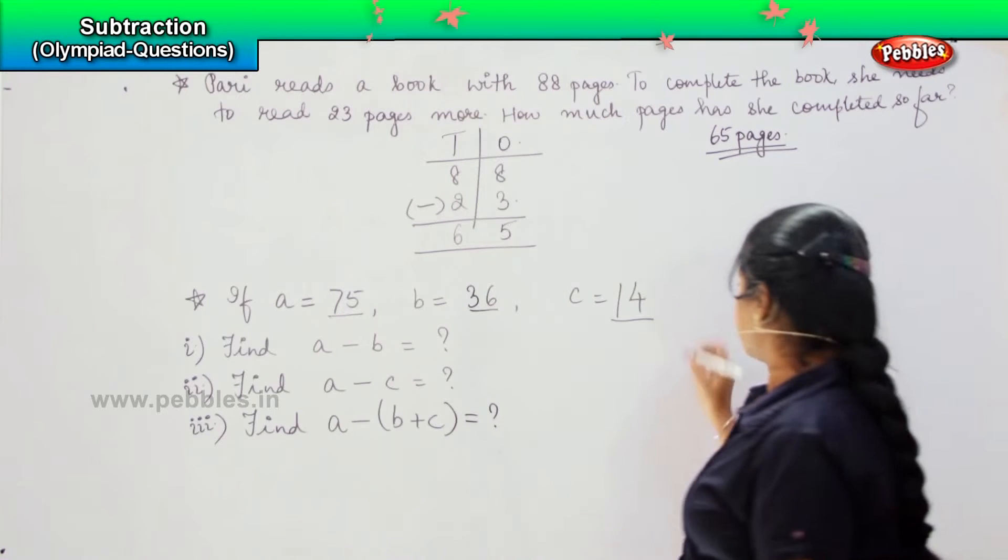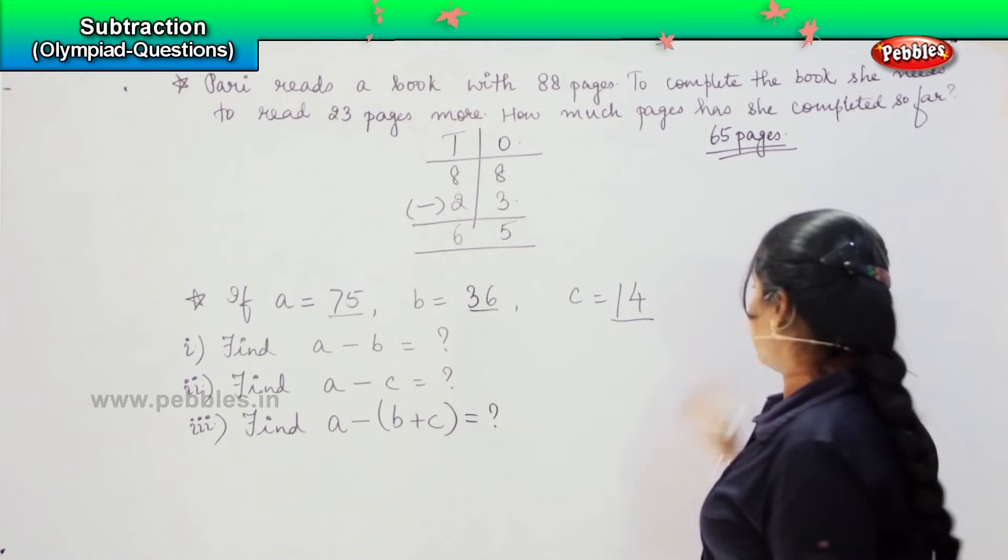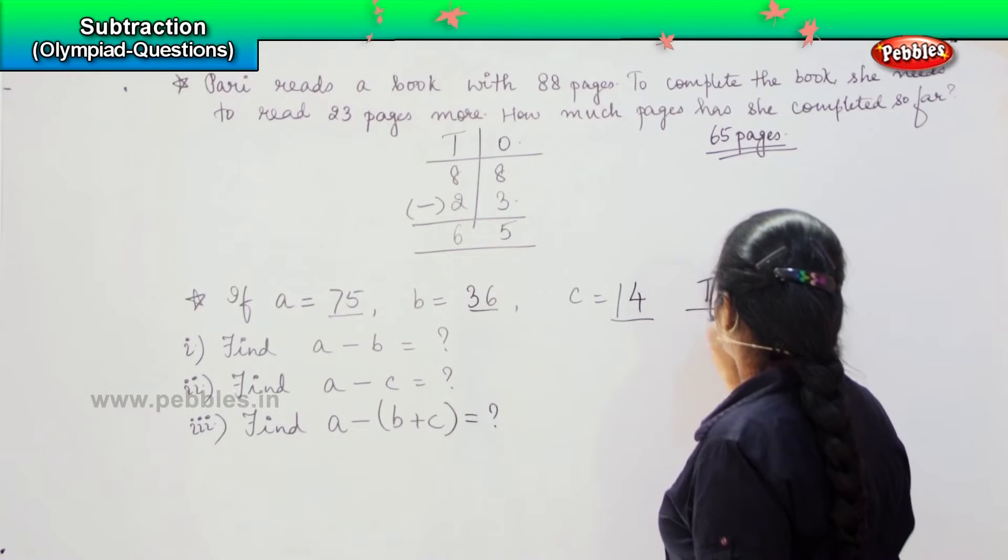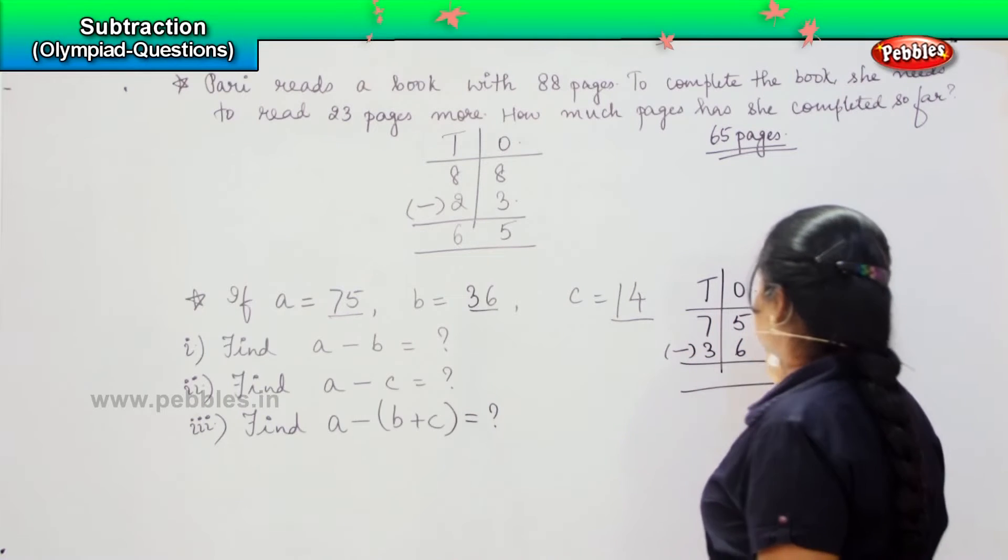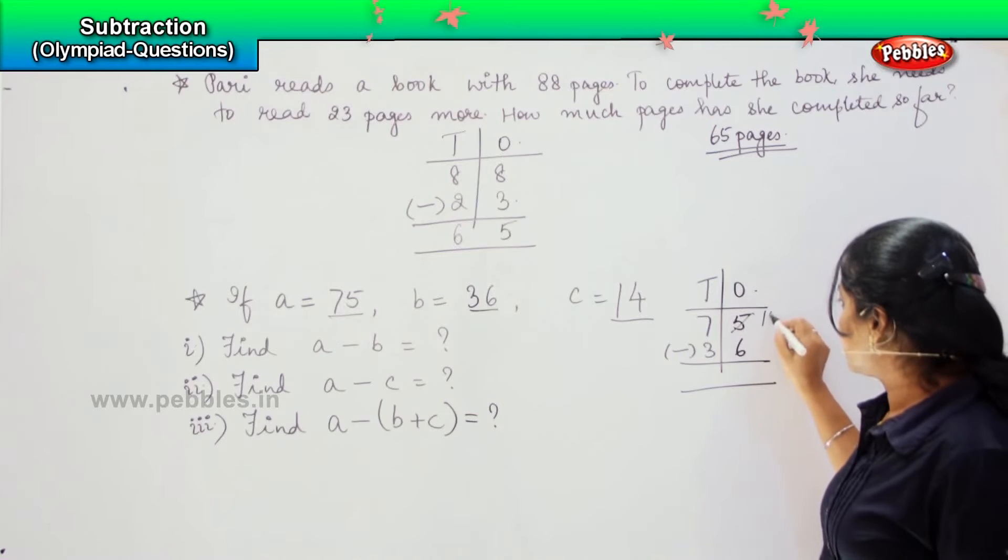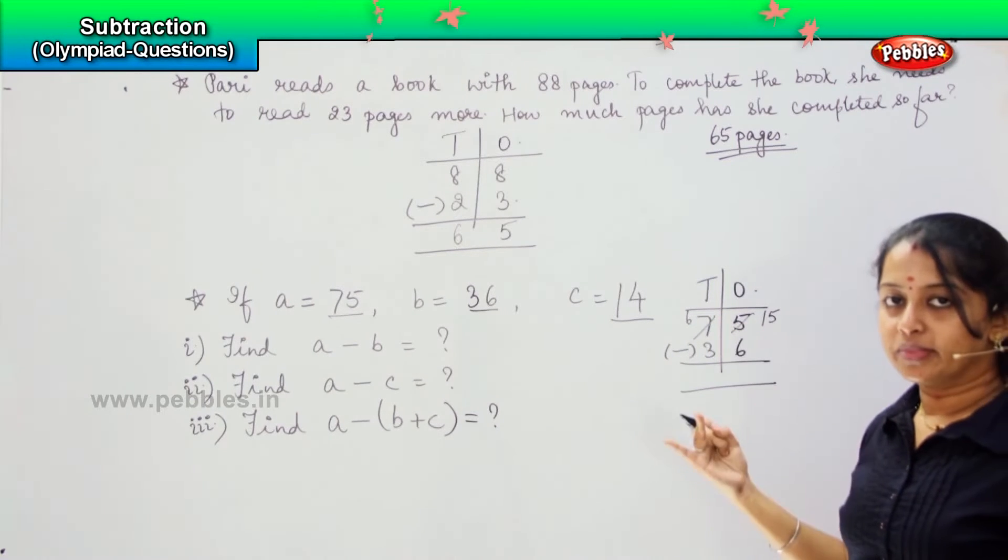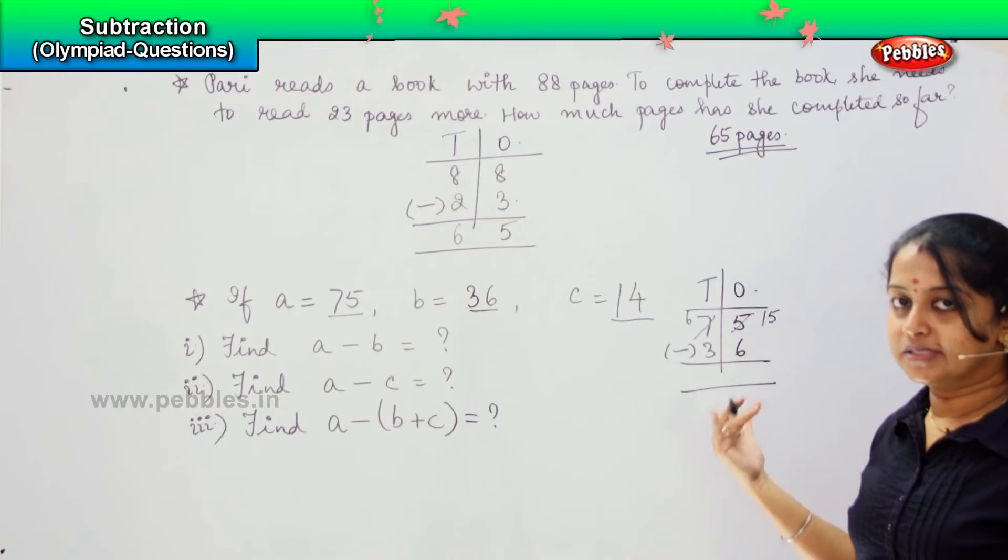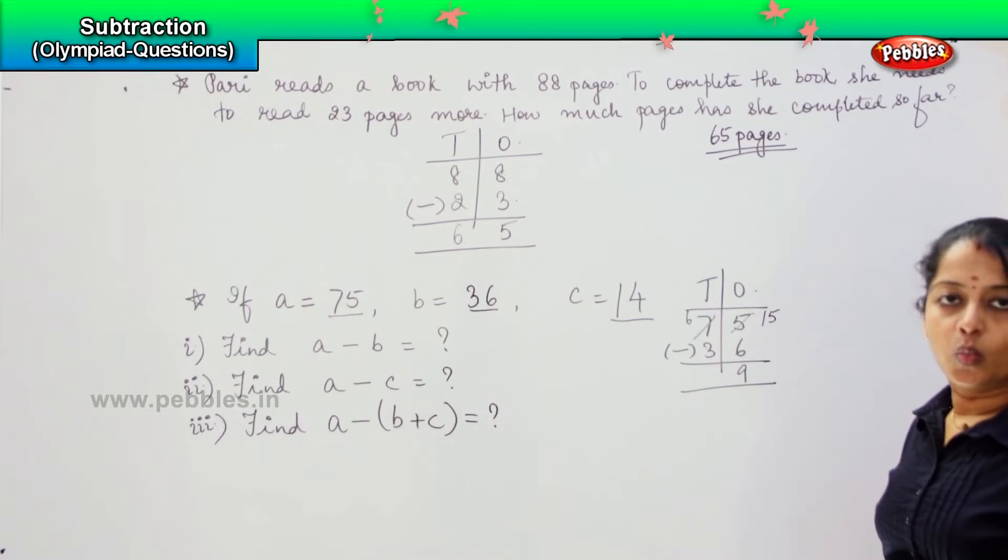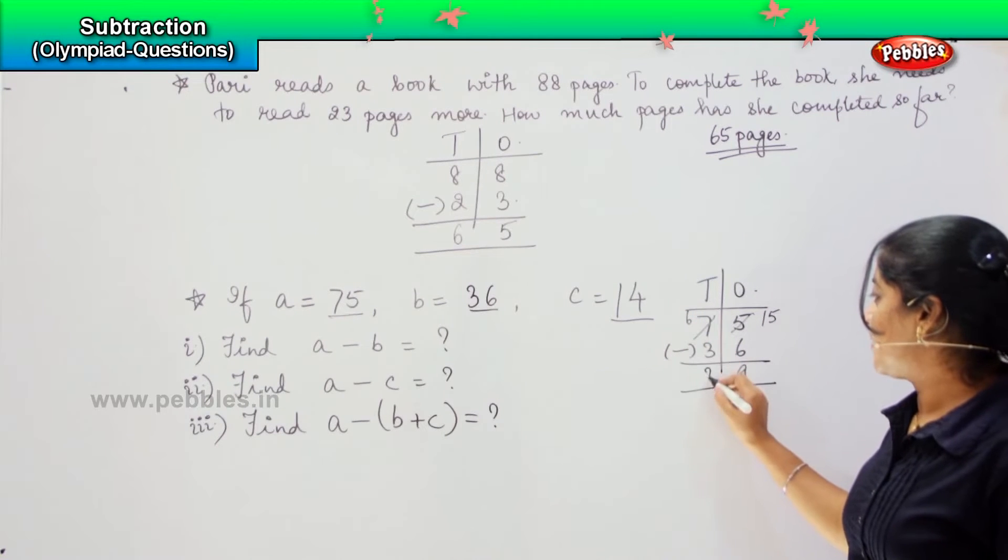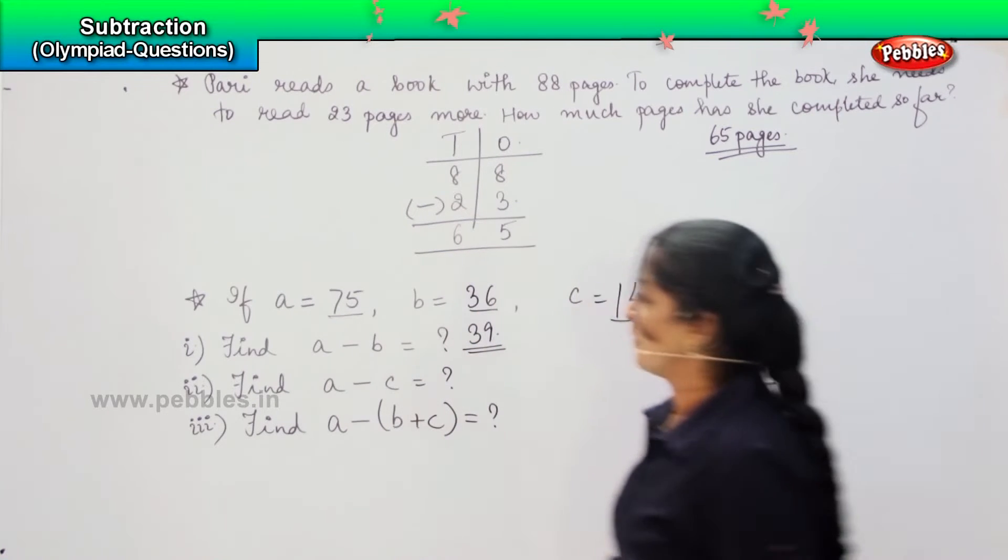So if the value is 75, B is 36, C is 14. First one it says A minus B, which means 75 minus 36. Since 5 is lesser than 6, borrow. 15 minus 6 is 9, and since it has borrowed, 6 minus 3 is 3. So my answer is 39.